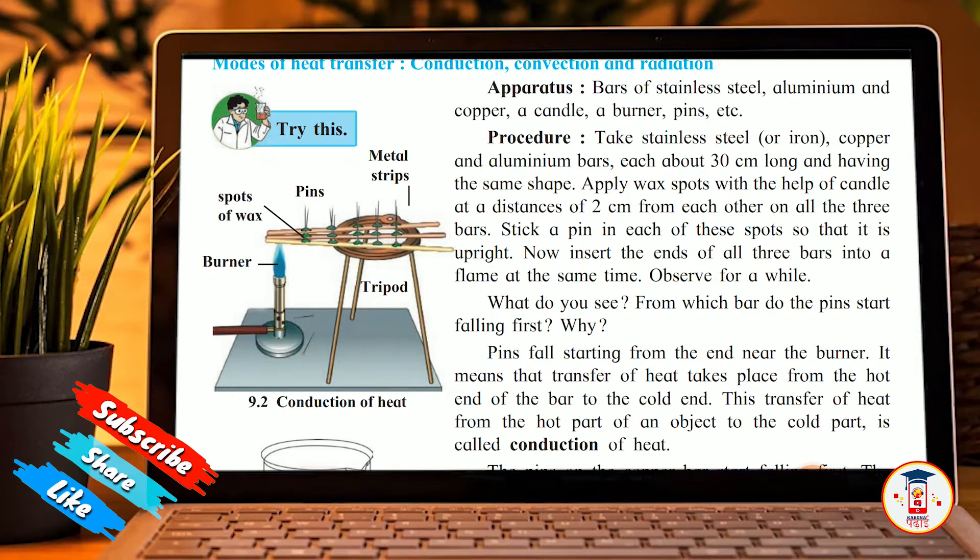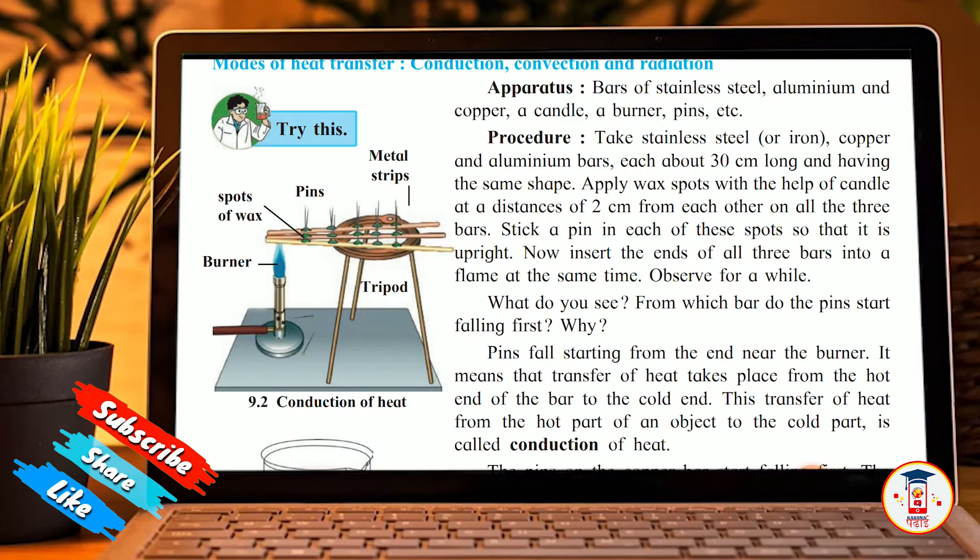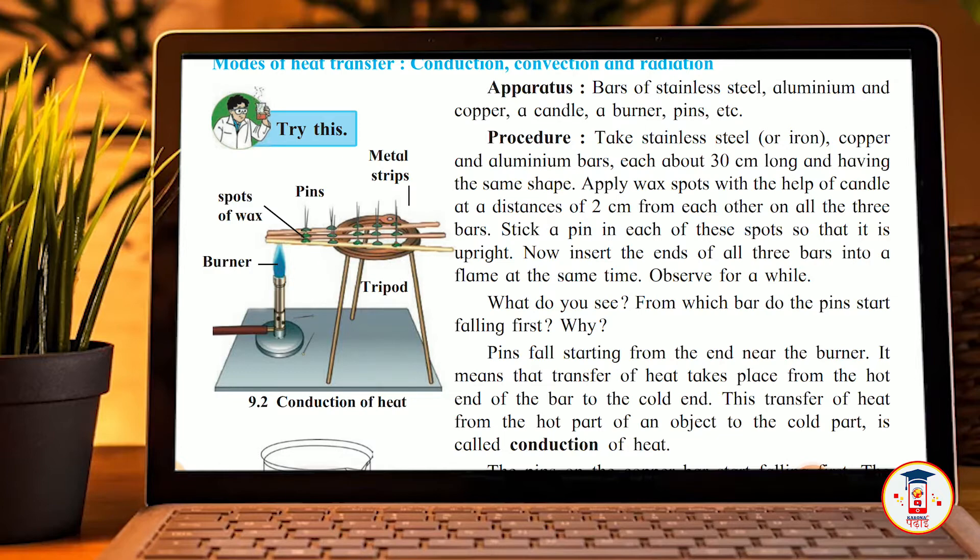Now insert the ends of all three bars into the flame at the same time. Observe for a while. What do you see? From which bar do the pins start falling first, and why? The bars are approximately 30 cm long with the same shape. As you can see on the tripod, candle wax has been placed. The three ends are kept at different distances, and the other ends are together under the burner.